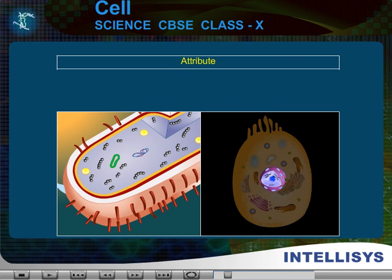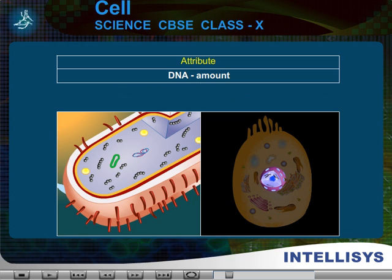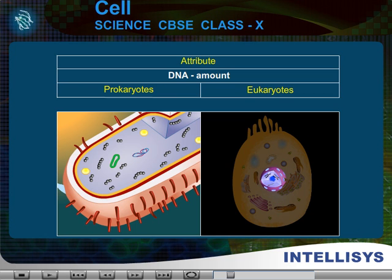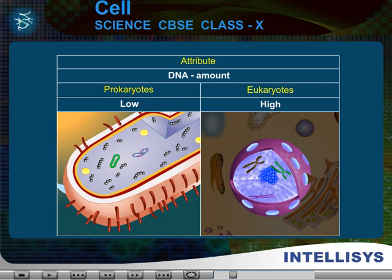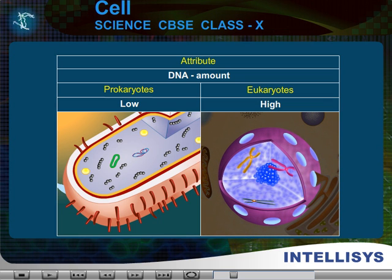Attribute: DNA amount. In prokaryotes, it is low. In eukaryotes, it is high.